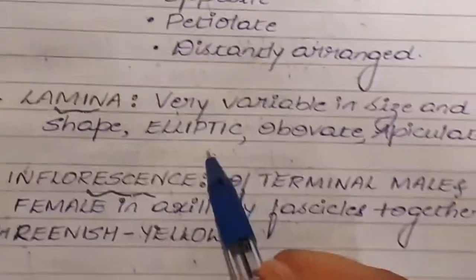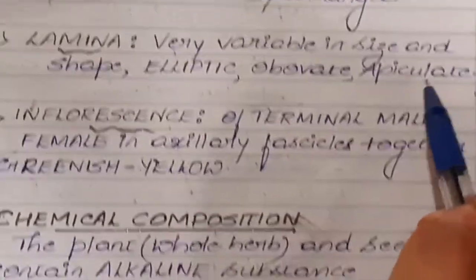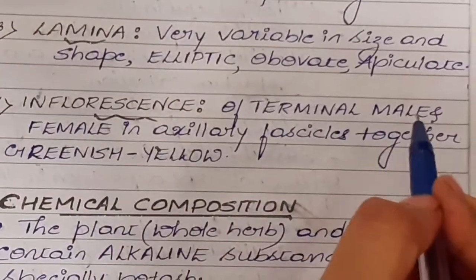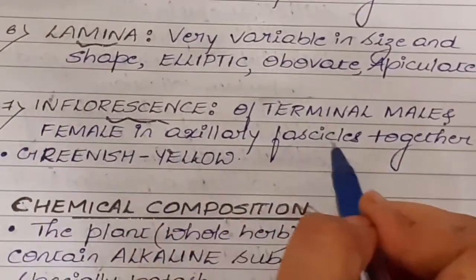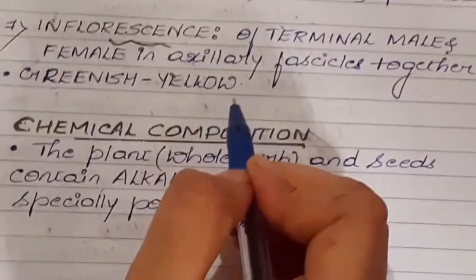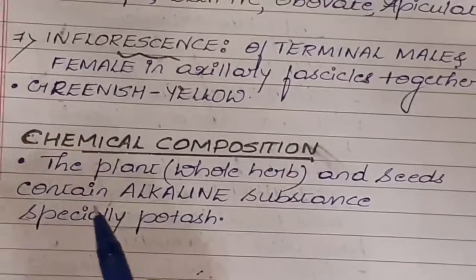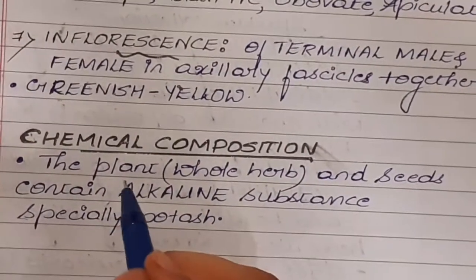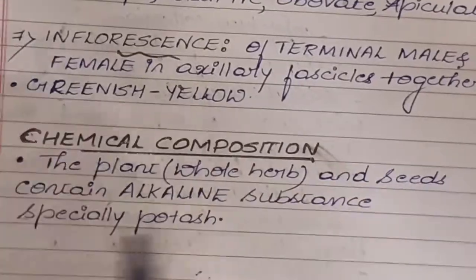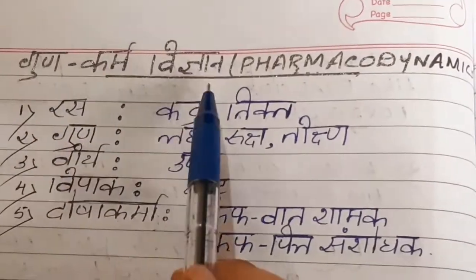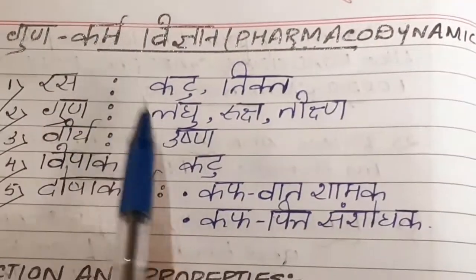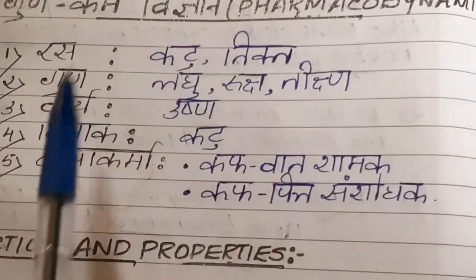Leaves: it has simple, opposite, petiolate, and distantly arranged leaves; lamina is very variable in size and shape, elliptic, obtuse, and apiculate. Inflorescence: it has terminal male and female flowers in axillary fascicles together; it is greenish or yellowish in color. Coming to chemical composition of the drug, the plant and seeds contain alkaline substances, especially potash.